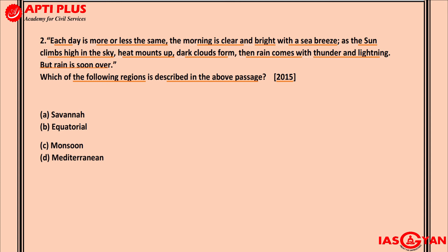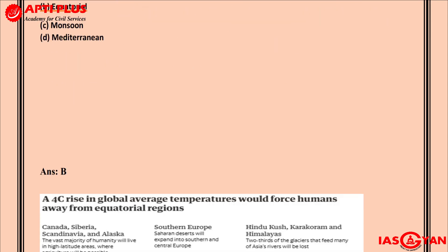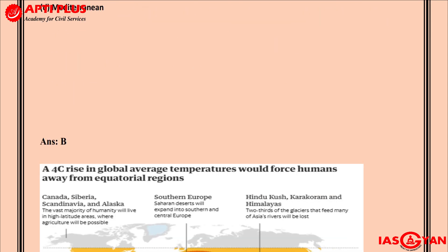The passage also says the rain is soon over — very intense rainfall but it ends quickly, and the same cycle repeats the next day. From all these hints — uniform daily pattern, sea breeze, convective rainfall with thunder and lightning that ends quickly — we can conclude that we are referring to the equatorial region. 2B is the right answer.